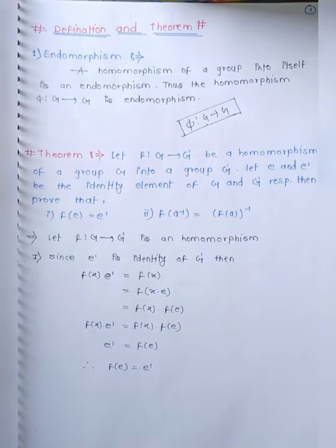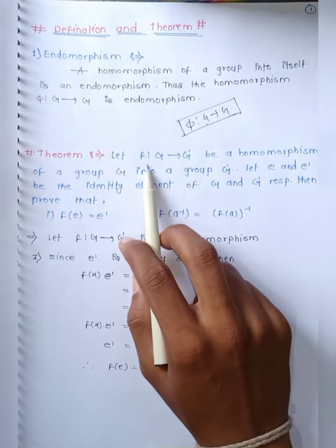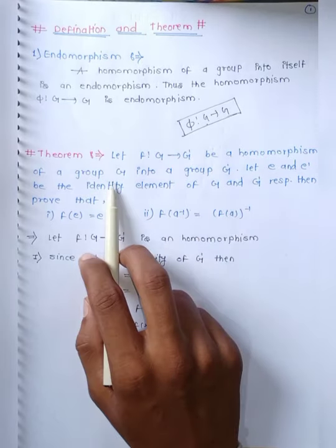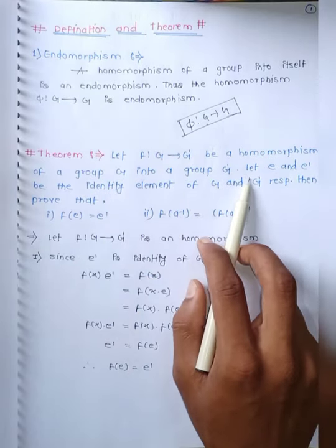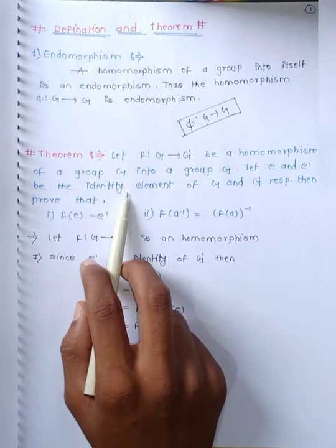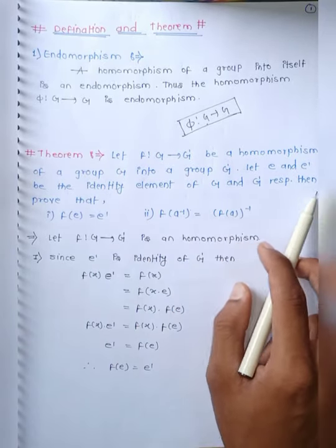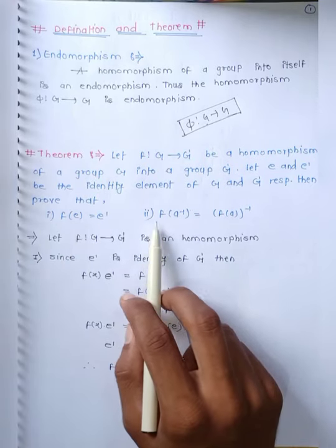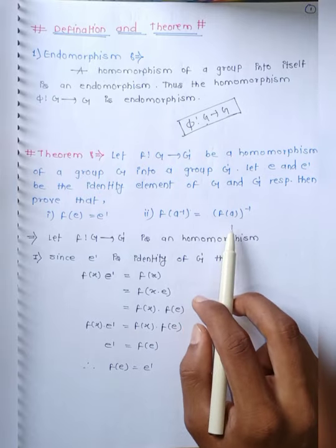Next is our theorem. Statement of the theorem: Let the mapping F from G to G' be a homomorphism of a group G into a group G', and let E and E' be the identity elements of G and G' respectively. Then prove that F of E equals to E', and the second condition is F of A inverse equals to F of A whole inverse.